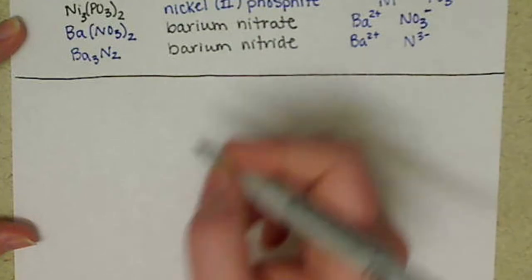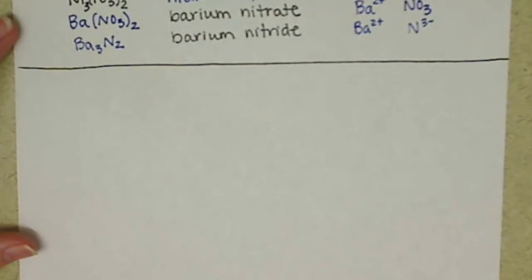So big bold line across your notes. We're going to move on into our other type of compound, our other type of bonding that can happen, and that's with our covalent bonds.